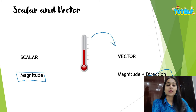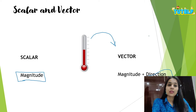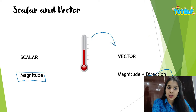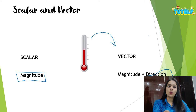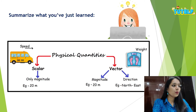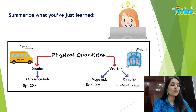Now let us look at force. Force equals mass times acceleration. Since acceleration has direction associated with it and is a vector quantity, our force is also a vector quantity. Let's quickly summarize what we have just learned.